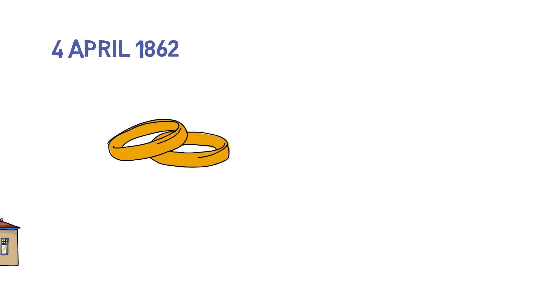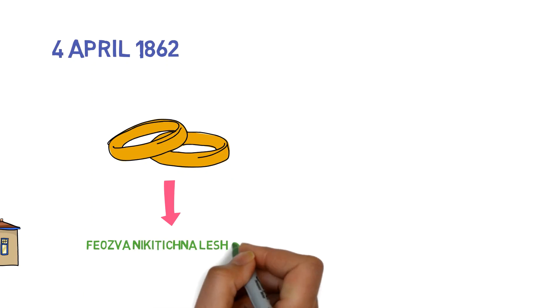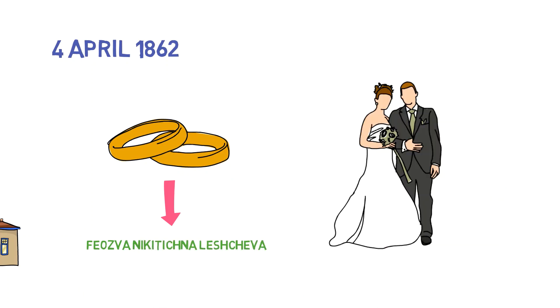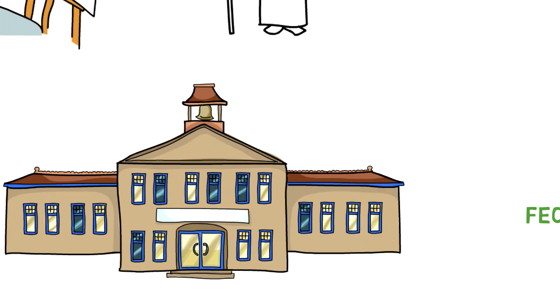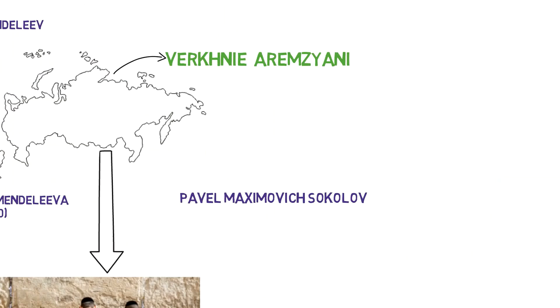On the 4th of April 1862, he became engaged to Fyantseva Nikitschana Leskcheva, and they married on 27th of April 1862 at Nikoleev Engineering Institute's church in St. Petersburg, where he taught.